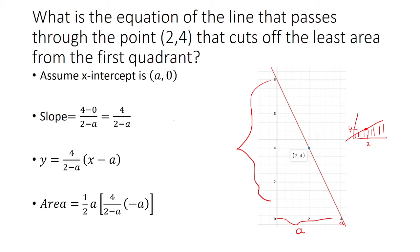So when we plug in x equals 0 here, we have 4 over 2 minus A, and then multiply that by negative A. So this part is the height, and this is the base.